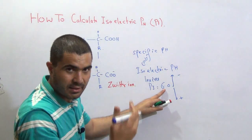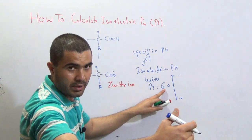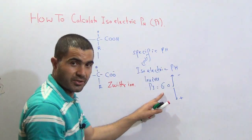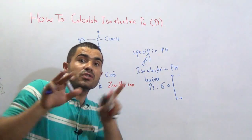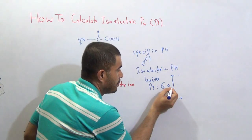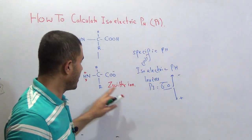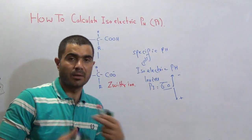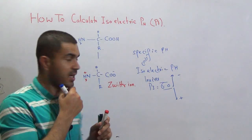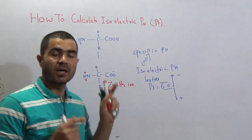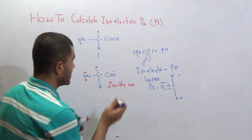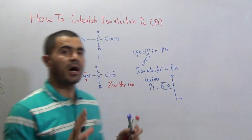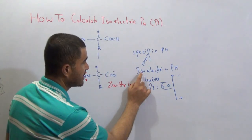If you increase the pH of leucine — moving to a basic medium — the amino acid will act as an acid, release a proton, and acquire a negative charge. If you decrease the pH, the leucine will get a positive charge only. If you bring the pH to exactly 6.0, the amino acid will have both positive and negative charge, and it is said to be neutral, because the negative charge cancels the effect of the positive charge.